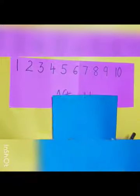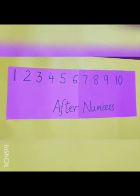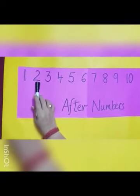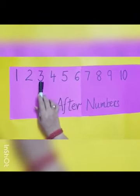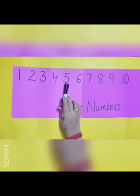That is called after numbers. For example, always 2 will come after 1, 4 will come after 3, 6 will come after 5.